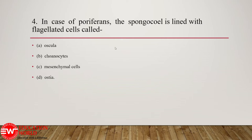In Porifera, the spongocoel present inside the body wall is lined with flagellated cells called choanocytes. Choanocytes have a collar-like structure, which is why they are also called collar cells, and they have a long flagellum whose lashing causes water currents and develops circulation of fluid in the body of the sponge. Hence the correct option is choanocytes. Oscula is the exhalant aperture of the sponge; mesenchymal cells are found in the mesenchymal layer between the two body wall layers; ostia are the inhalant pores. The correct option compatible with the question is option B, choanocytes.